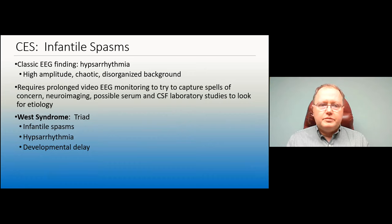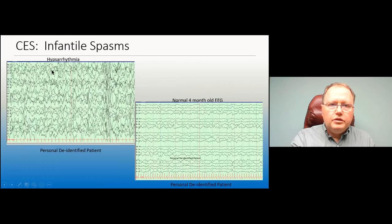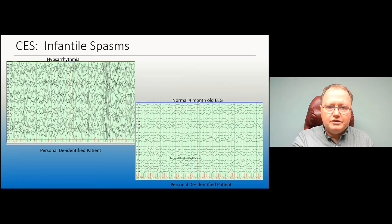The classic EEG finding is hypsarrhythmia — very high amplitude, chaotic, disorganized background. We need EEG monitoring to capture a seizure and confirm the diagnosis. West syndrome is the triad described by Dr. West: infantile spasms, hypsarrhythmia on EEG, and developmental delay. This hypsarrhythmia looks completely different from a normal four-month-old EEG — dramatically higher amplitude and disorganized. By definition, all infantile spasms will eventually go away, but the key difference is how quickly treatment is achieved.